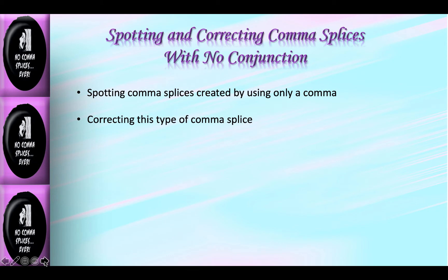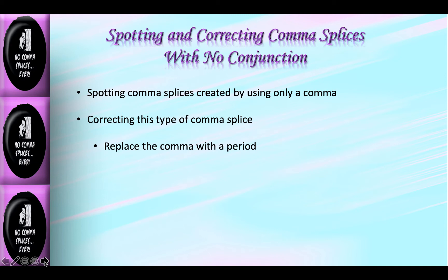There are four ways to correct this type of comma splice. The easiest way is to replace the comma with a period and capitalize the first word of the independent clause to the right of that new period, which is now a separate sentence. Of course, that correction eliminates the close connection between the ideas in the two sentences.